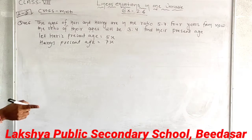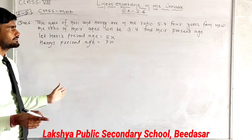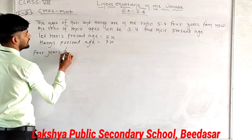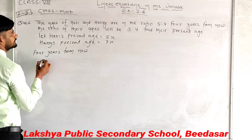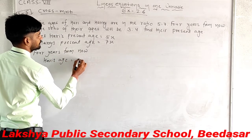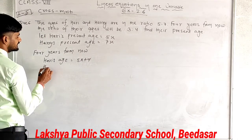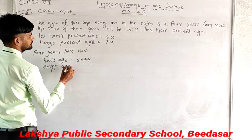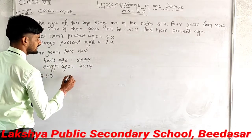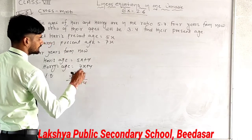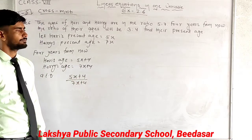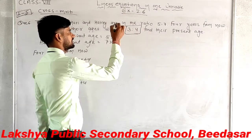4 years from now, the ratio of their ages will be 3 to 4. After 4 years, Harry's age will be 5x plus 4, and Harry's age will be 7x plus 4. According to the question, the ratio of their ages after 4 years is (5x plus 4) upon (7x plus 4), and this equals 3 upon 4.